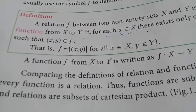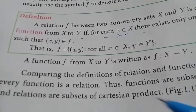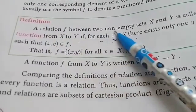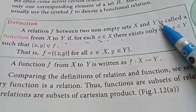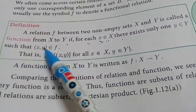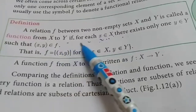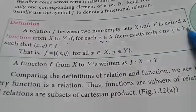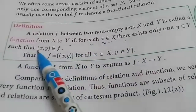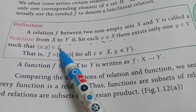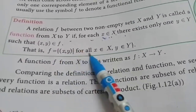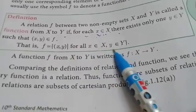Good morning students, today we are going to learn the topic: function. A relation f between two non-empty sets x and y is called a function from x to y if for each x belonging to X, there exists only one y belonging to Y such that (x, y) belongs to f. So f equals {(x, y) such that for all x in X, y in Y}.